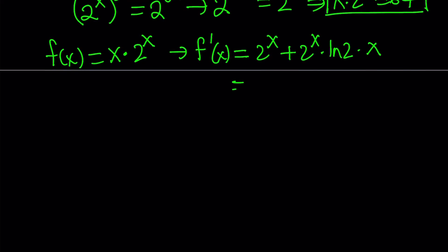Now this is factorable. Let's factor out 2^x, and we end up with 2^x(1 + x·ln(2)). When we're trying to find where this function is increasing or decreasing, we take the first derivative and set it equal to 0 to find the critical point. Let's go ahead and set this derivative equal to 0.